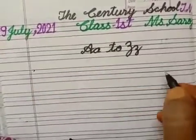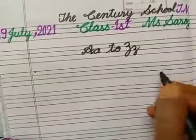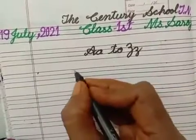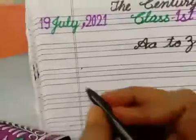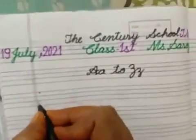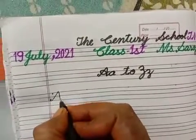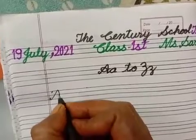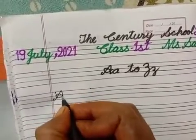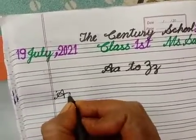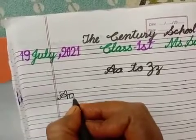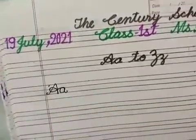Let's start with A. Make a slant line, touch the red line, come down, touch the black line. Now make a circle, come down. A.